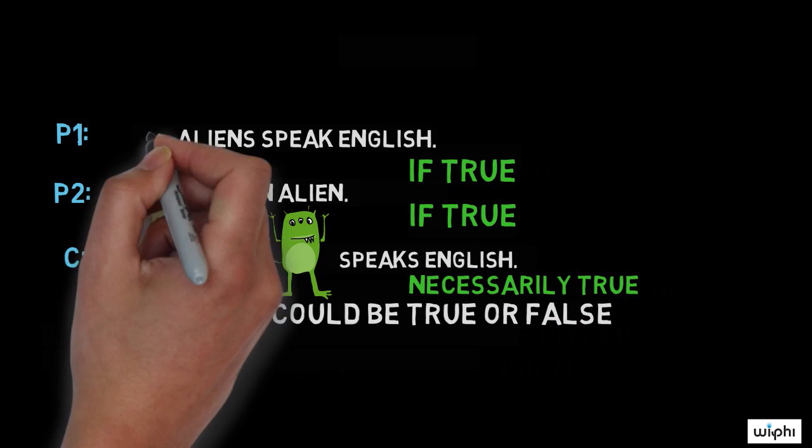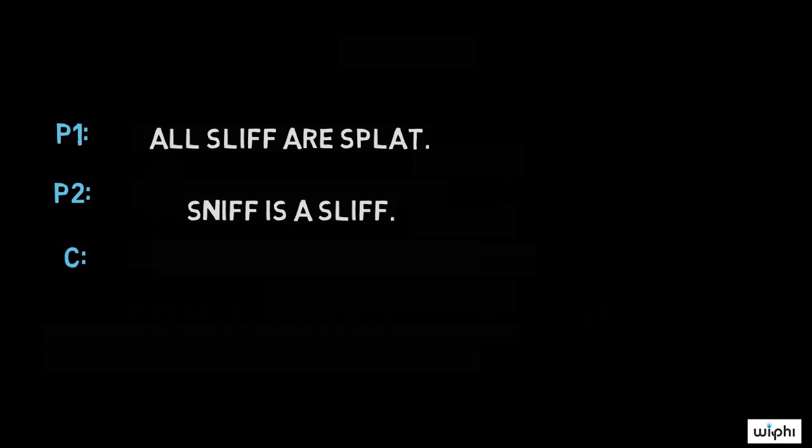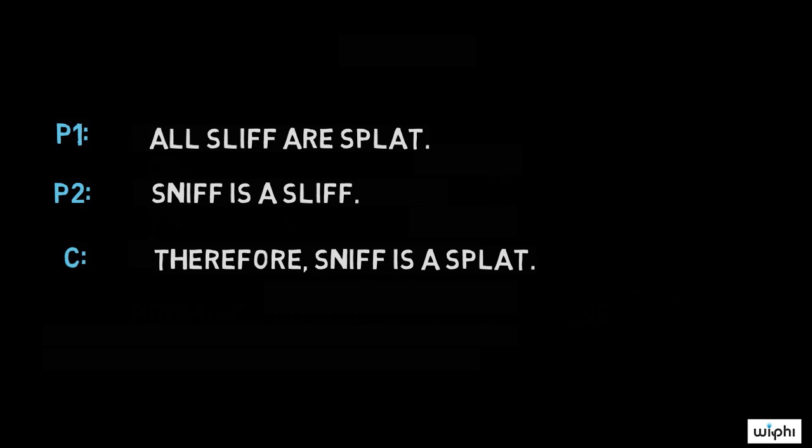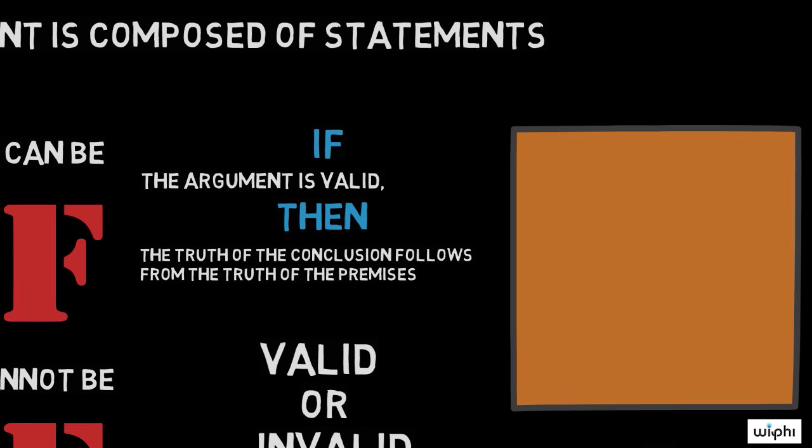We could even use undefined terms. P1: All sliff are splat. P2: Sniff is a sliff. Conclusion: Therefore, sniff is a splat. Again, although the truth of the premises is undefined, we have a valid argument. This is just one type of valid argument form, and you can learn about others in upcoming videos.